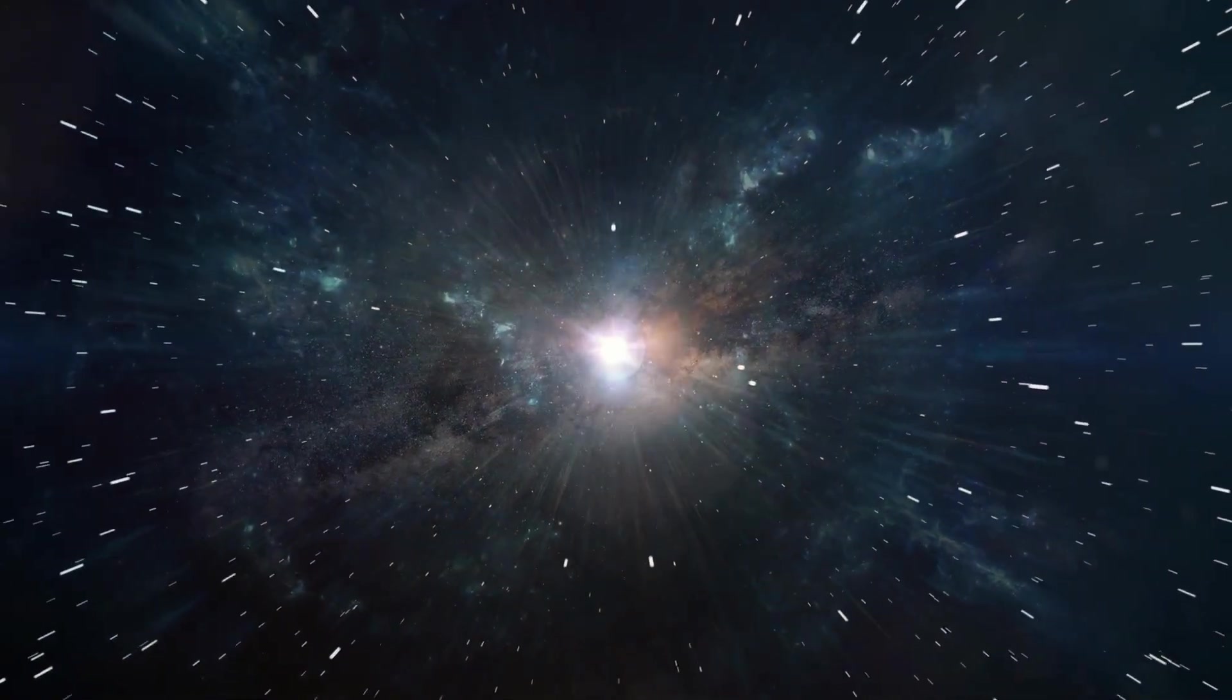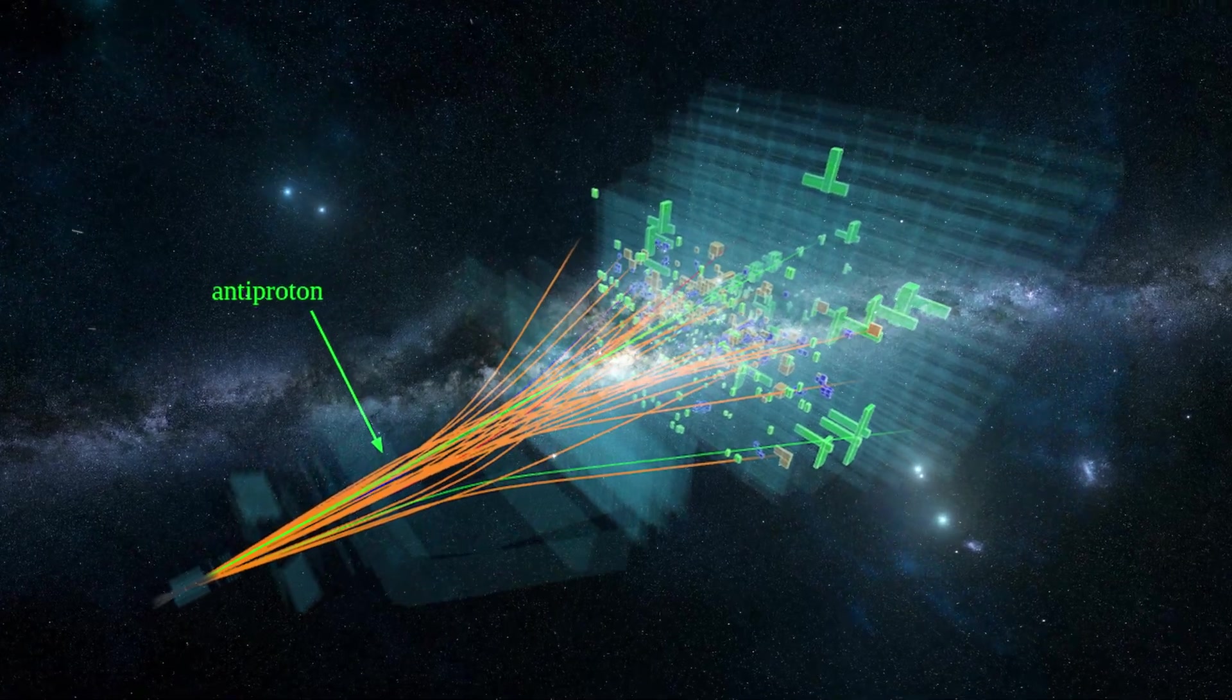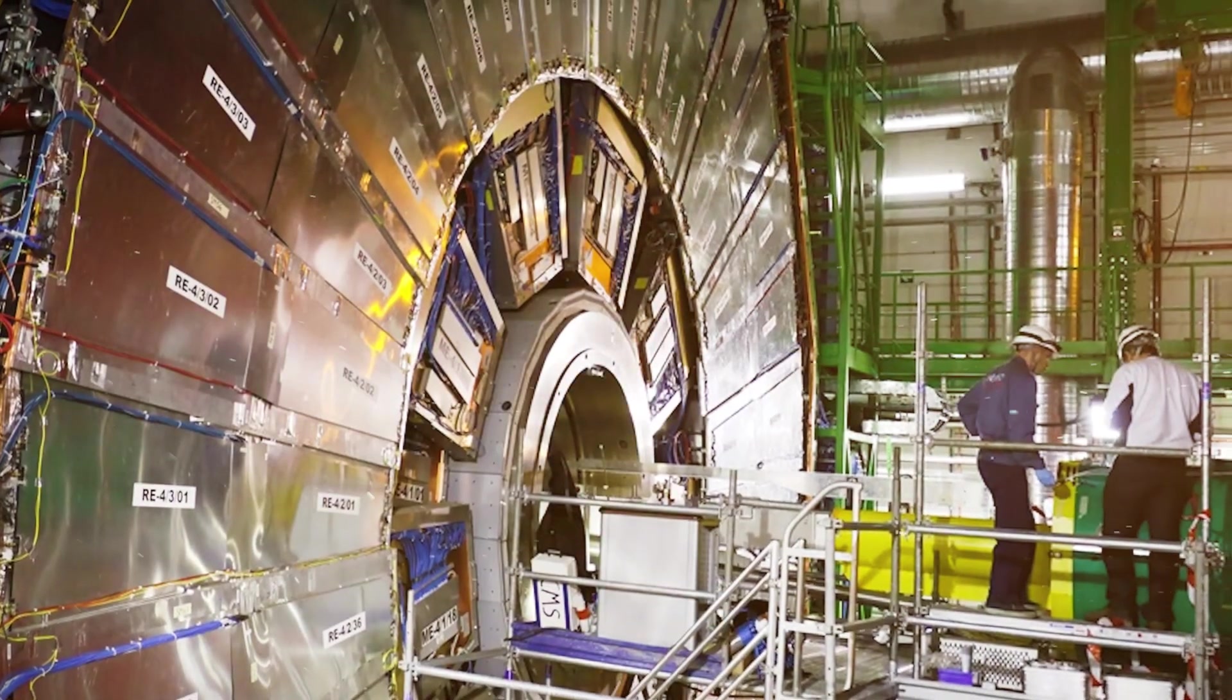Thankfully though, that's not the case. We're surrounded by matter. We have stars and planets, entire galaxies. Me and you are made of matter. Antimatter is much more rare. Scientists find it in cosmic rays and particle accelerators. So this lopsidedness between matter and antimatter is a bit of a mystery.